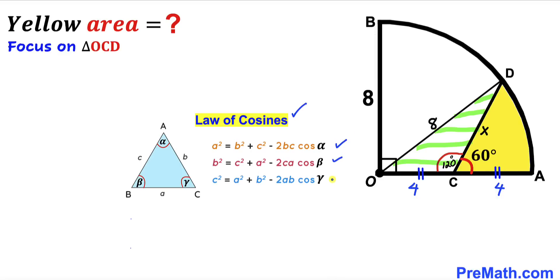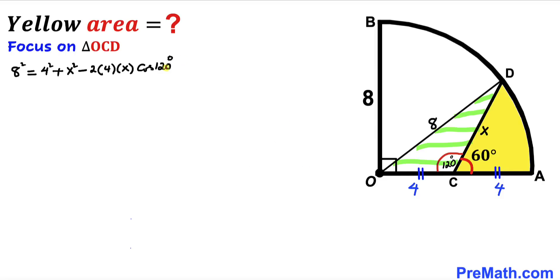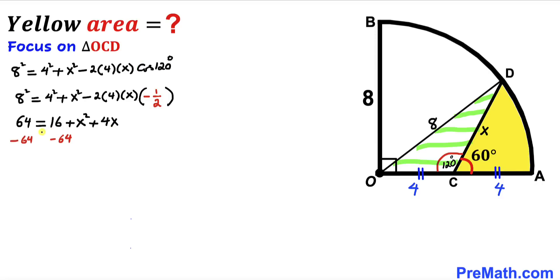Now let's recall the law of cosines. We have three forms of the law of cosines for this triangle. Our side lengths are 8, 4, and X, and the included angle is 120 degrees. We are going to solve for X, so we have: 8 squared equals 4 squared plus X squared minus 2 times 4 times X times cosine of 120 degrees. We know that cosine of 120 degrees is negative 1/2, so I have replaced it accordingly.